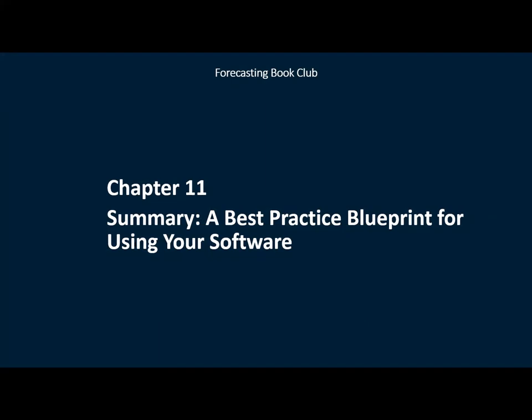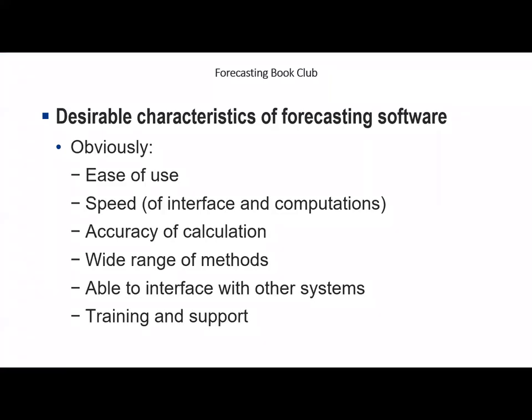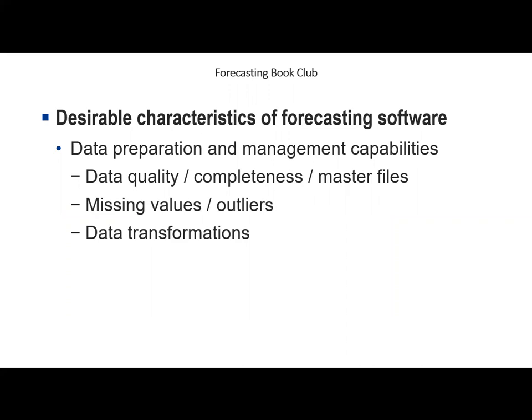Let's move on to Paul's last chapter: a summary of guidance for using forecasting software and a blueprint for best practices. Paul begins by itemizing desirable characteristics of forecasting software — what he calls the 'obvious' characteristics that everyone would expect, like a fast, easy-to-use interface. He then goes through several less obvious characteristics that are necessary or very helpful.